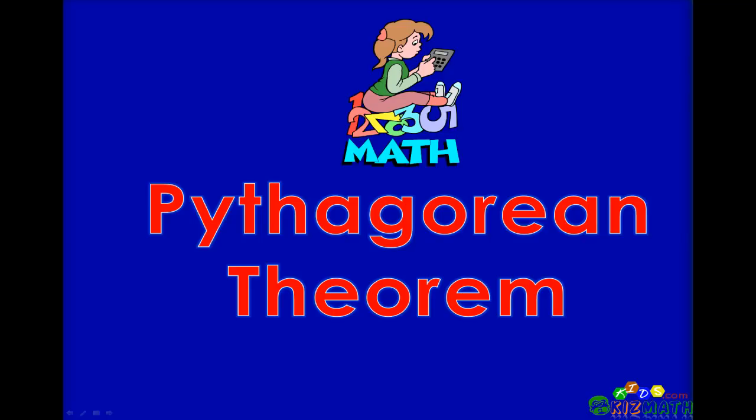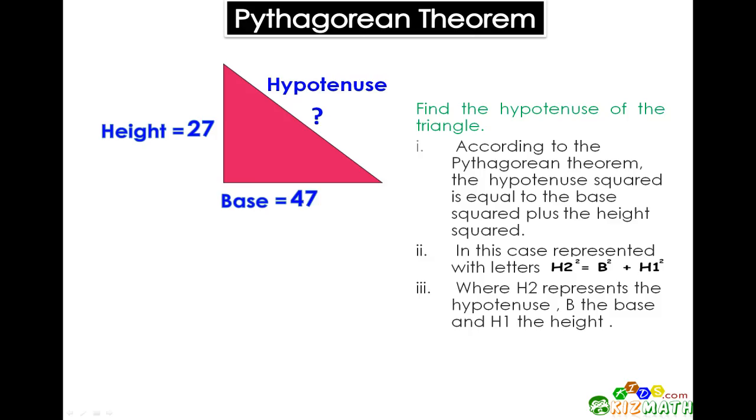Today we're going to learn about the Pythagorean Theorem. Let's look at the theorem first. The theorem says that the hypotenuse squared equals the base squared plus the height squared. Or we can say H2² = B² + H1².